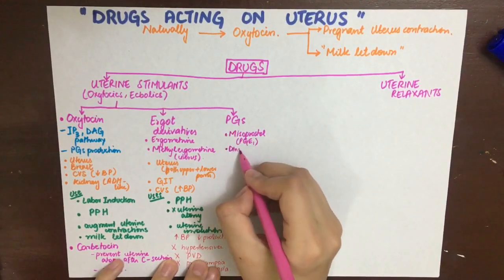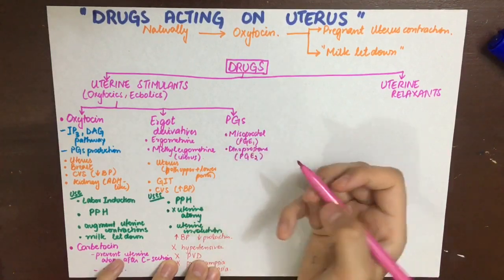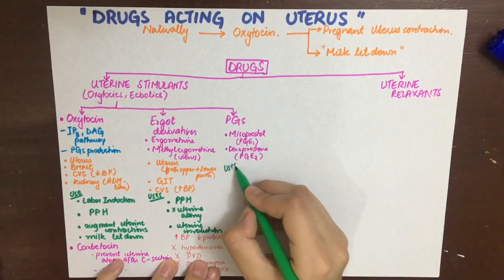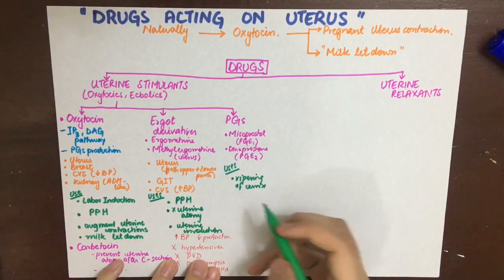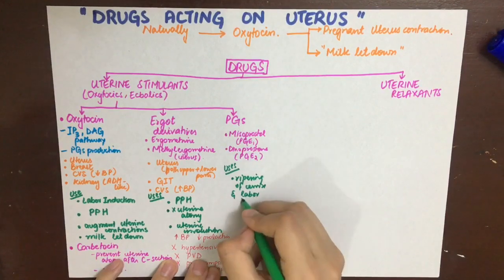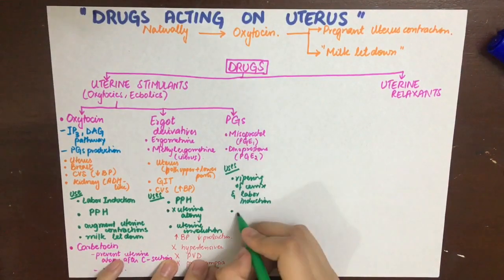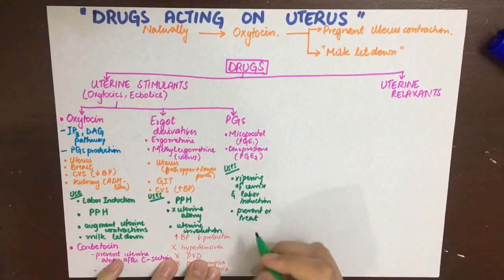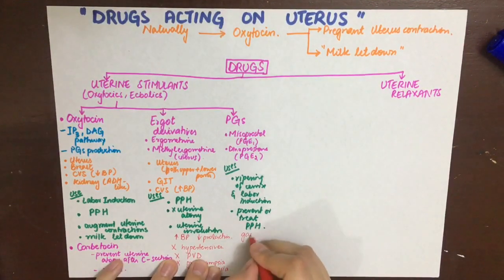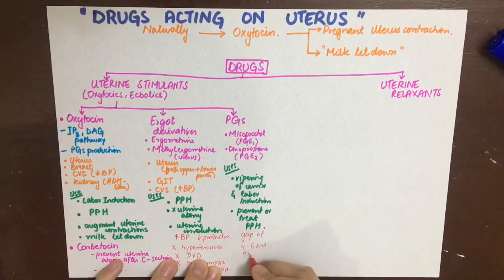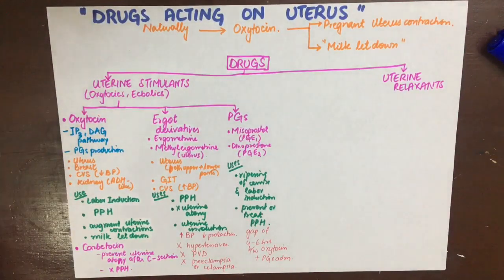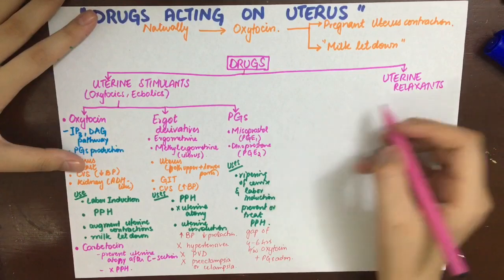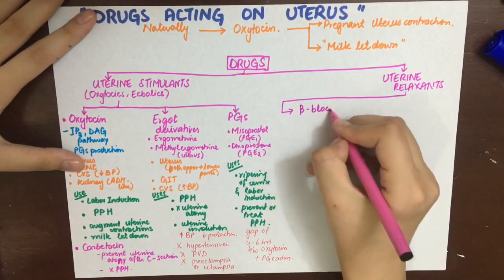The next uterine stimulants are prostaglandins. Prostaglandin analogs such as misoprostol (PGE1 analog) and dinoprostone (PGE2 analog) can be used in ripening and dilation of the cervix for labor induction. Misoprostol also increases uterine contraction and can treat or prevent postpartum hemorrhage. Oxytocin and prostaglandins have a synergistic action, but there should be a gap of four to six hours between their administration.